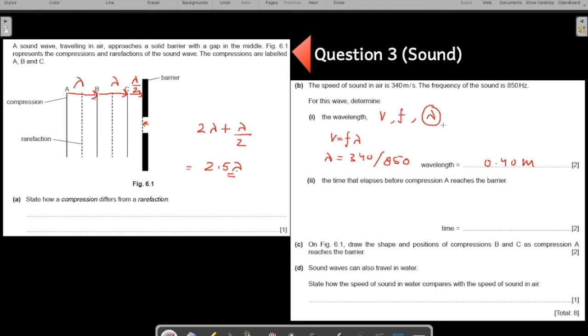Distance you have found out, you know the speed. You can calculate the time using the speed distance time formula. Speed is distance over time. So time is how much? Distance over speed. Distance is how much? This is your total distance traveled. 2.5 times lambda value I have already calculated here, 0.4. And the speed value is given to you which is 340.